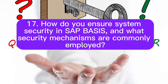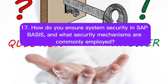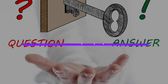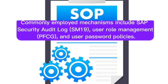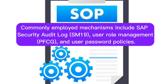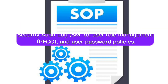Question 17: How do you ensure system security in SAP Basis, and what security mechanisms are commonly employed? Security in SAP Basis includes user authentication, authorization, role management, and regular system patching. Commonly employed mechanisms include SAP security audit logs (SM19), user role management (PFCG), and user password policies.